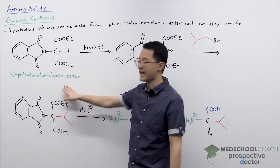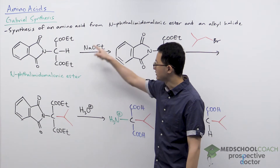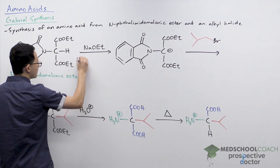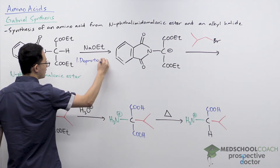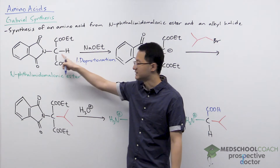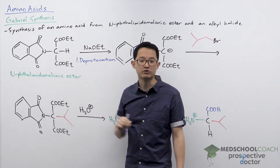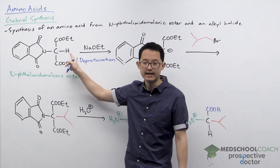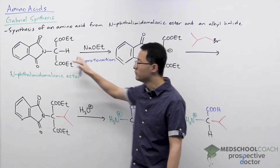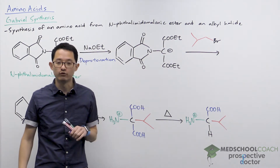Starting with the N-phthalimido malonic ester, the first thing you want to do is add a base — sodium ethoxide, which is a strong base. The reason you add a base is to remove a proton from your molecule. The hydrogen on the alpha carbon is attached to a carbon that is alpha to two different carbonyl groups. As a result, this hydrogen is slightly acidic. Your base removes this hydrogen and you form an enolate — a carbon with a full negative charge.